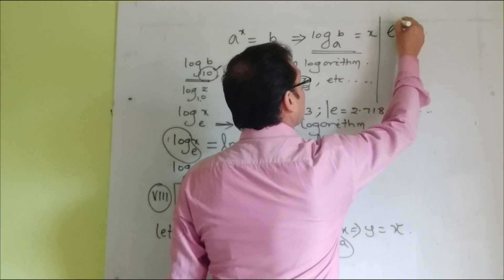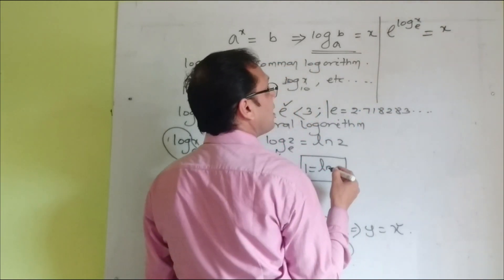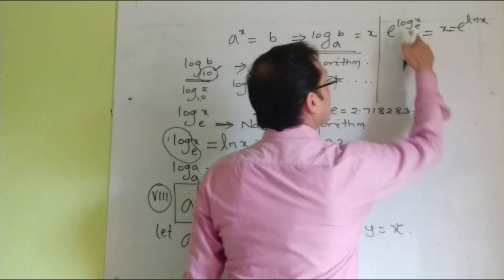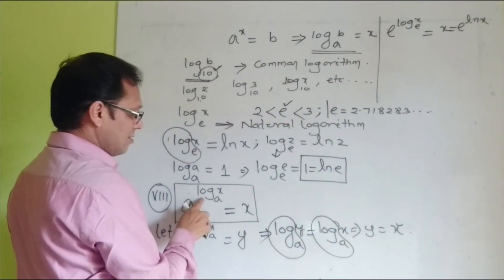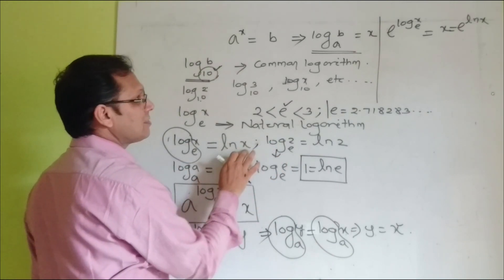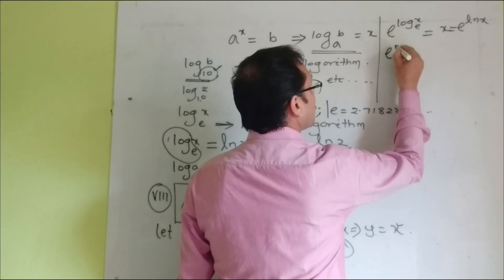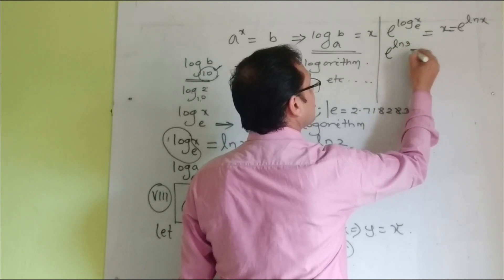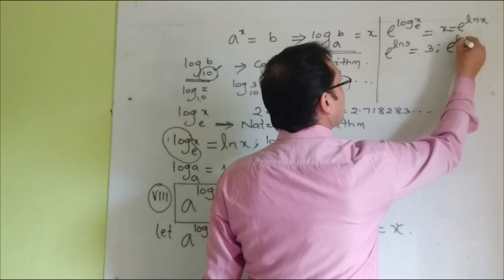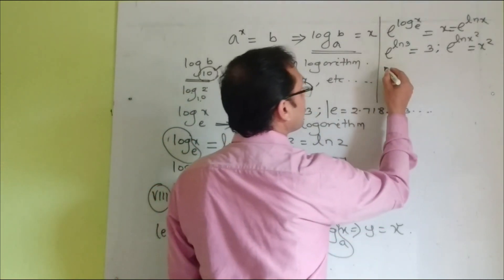So we can write: e to the power log x to the base e equals x. In other words, since log x to the base e can be written as ln x, we get e to the power ln x equals x. For example, e to the power ln 3 equals 3, and e to the power ln(x²) equals x².